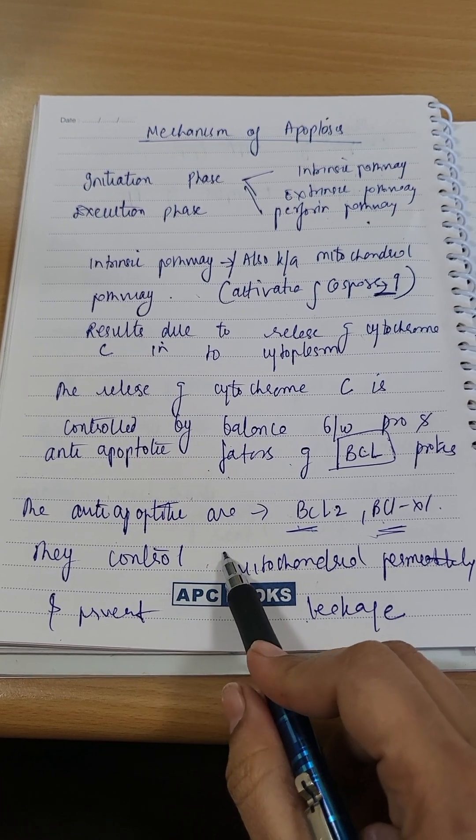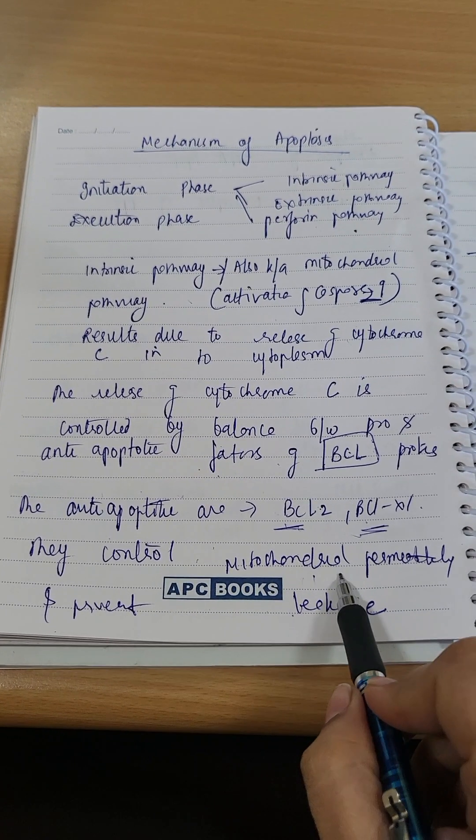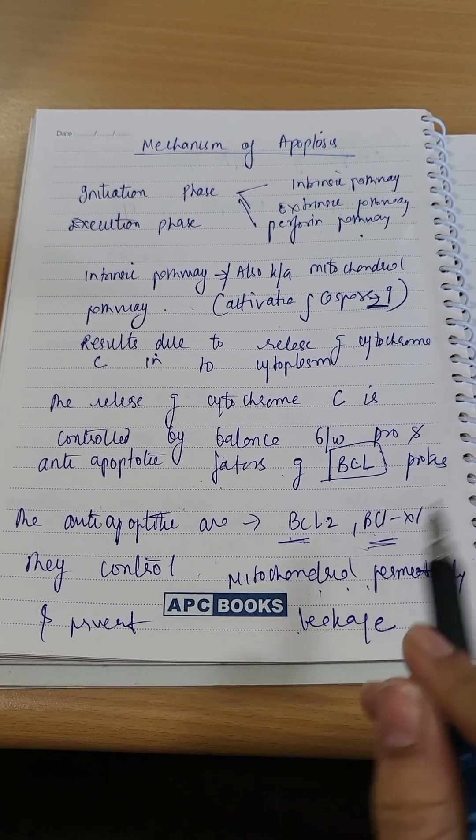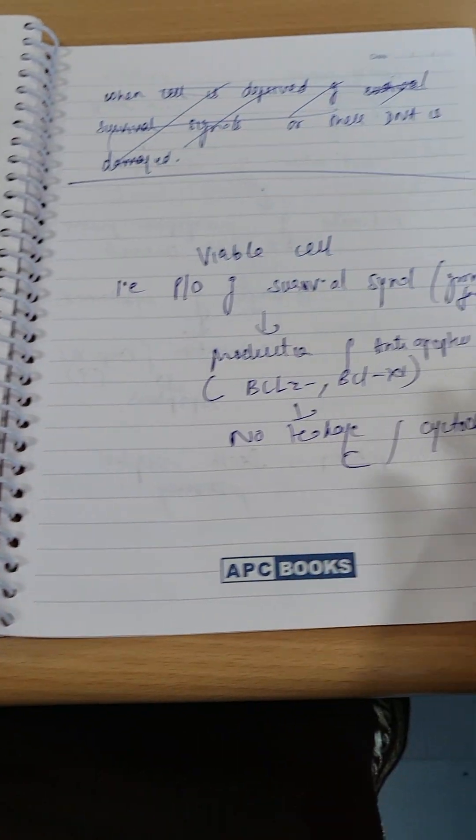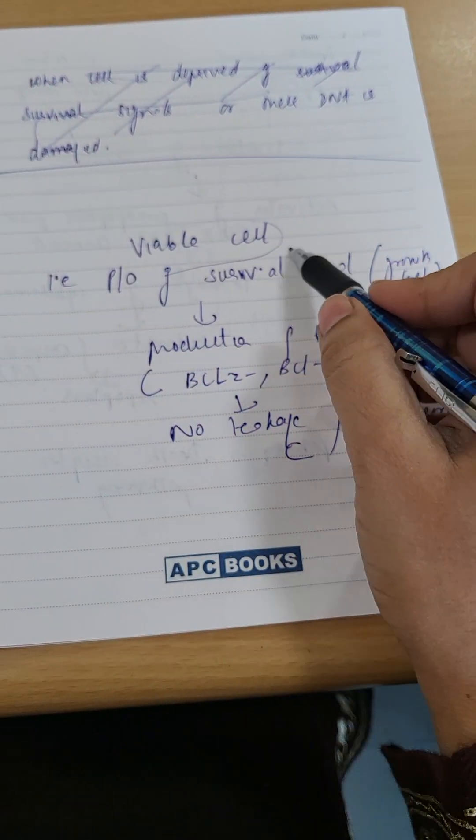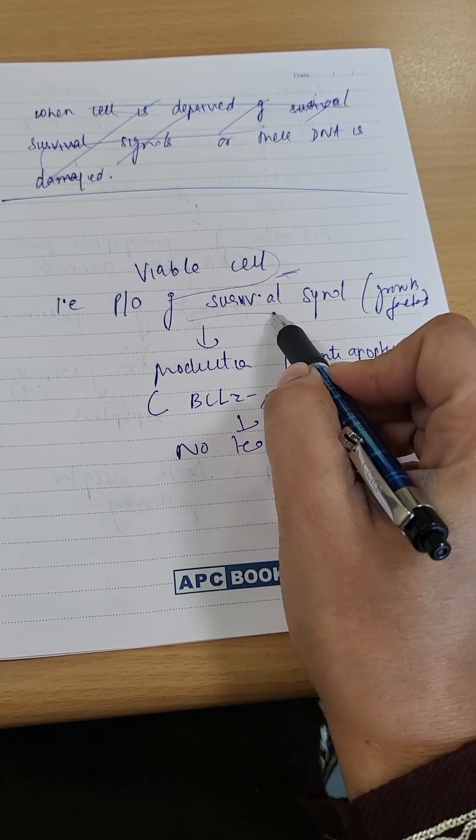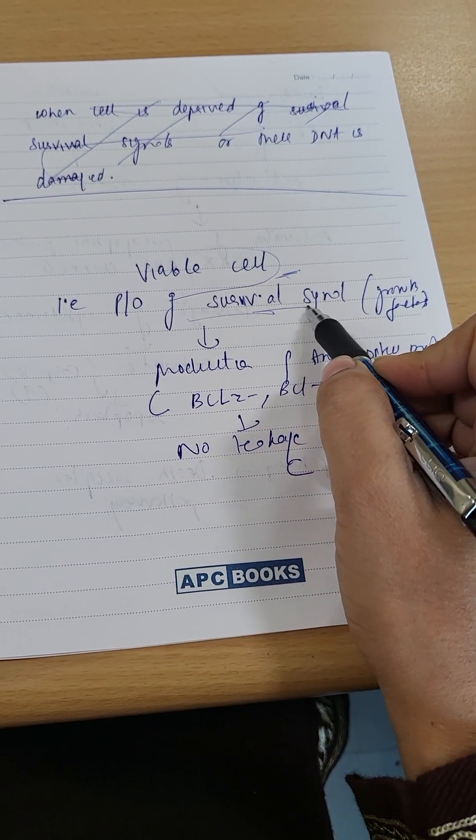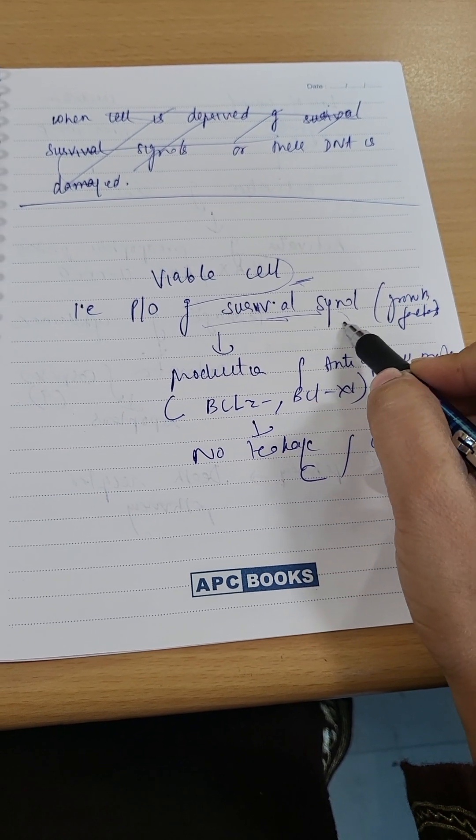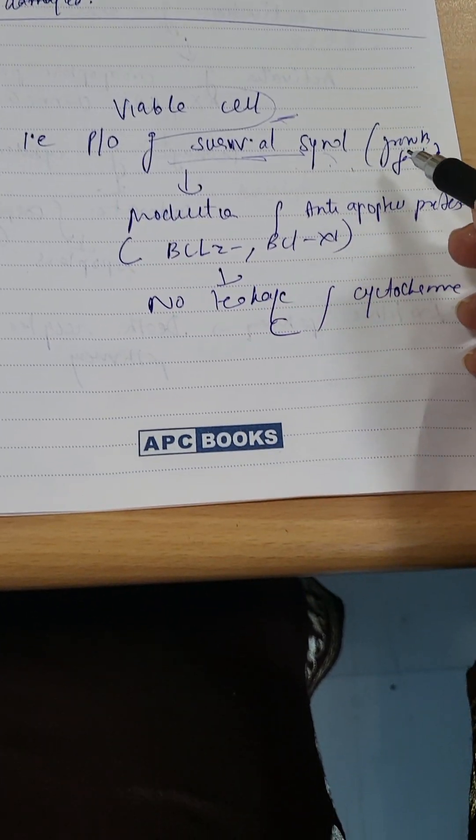For example, normally a viable cell, which is a good cell, has the presence of survival signals or growth factors. They are getting growth factors, so what will happen?